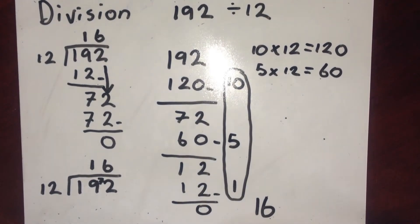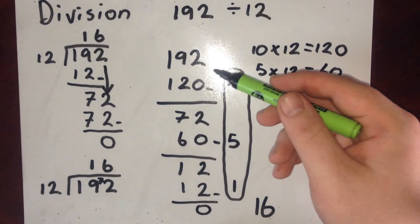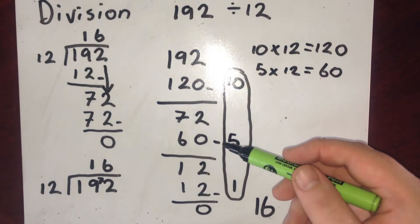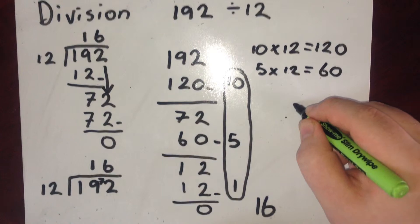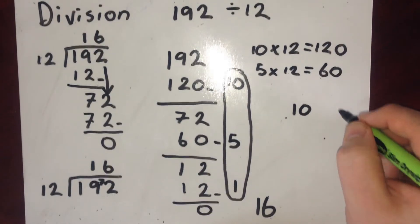You could also use this same method in reverse. So instead of taking amounts away, you could add amounts on. So I could say, I know there's 10 lots of 12 in 120.